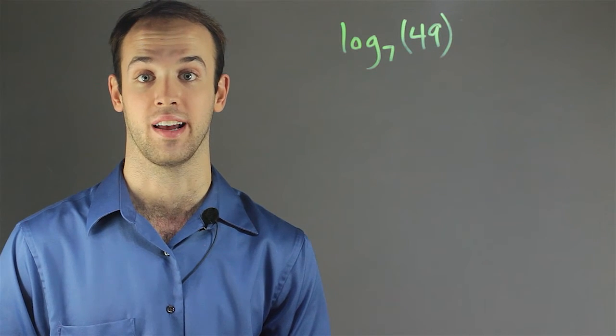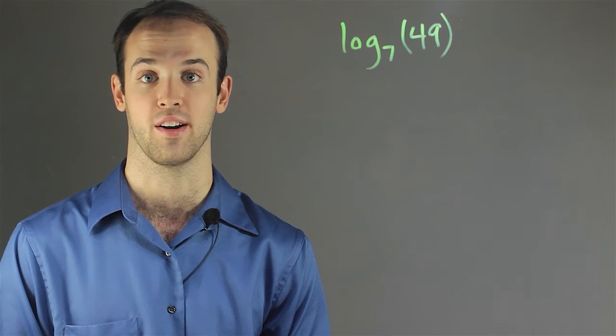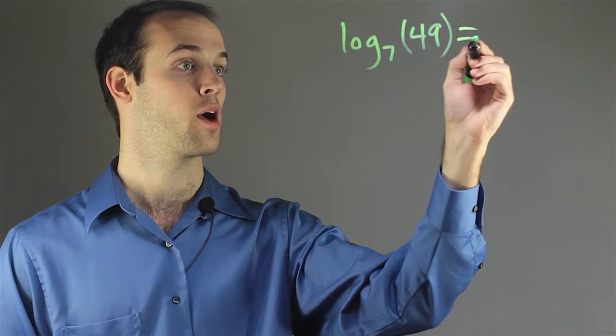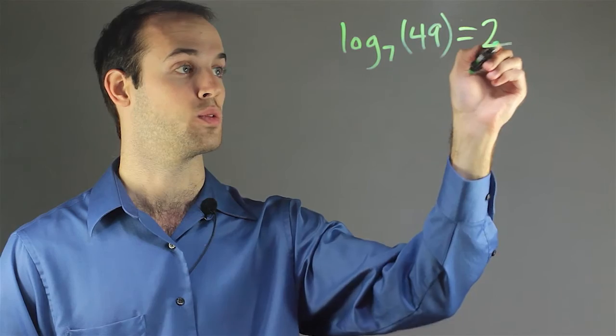And we all know the answer to that one, it's to the power 2, 7 squared equals 49. So log base 7 of 49 is equal to 2.